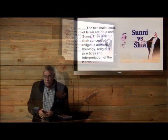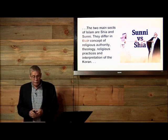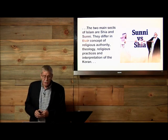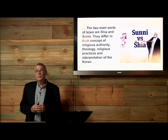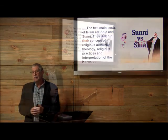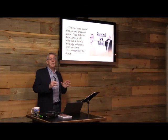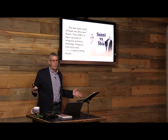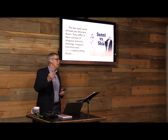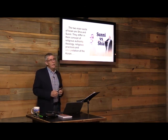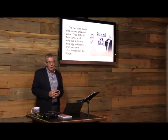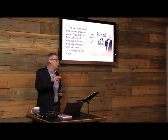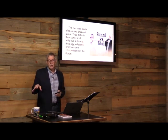The two main sects of Islam are Shia and Sunni. They differ in their concept of religious authority, theology, religious practices, and interpretation of the Quran. The vast majority of Muslims in the world are Sunni — between 80 to 85% — and the Shia minority account for 15 to 20%, with large populations in Iran, Iraq, Pakistan, and India.